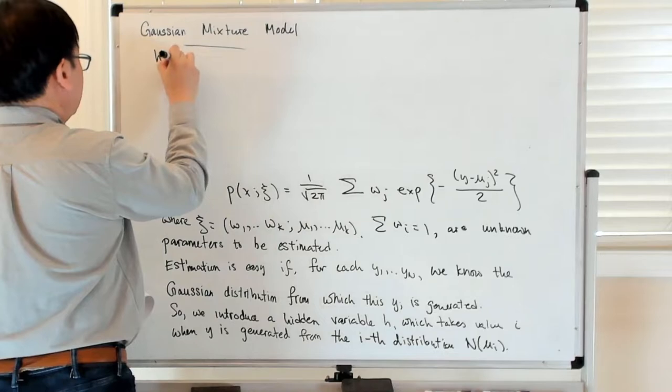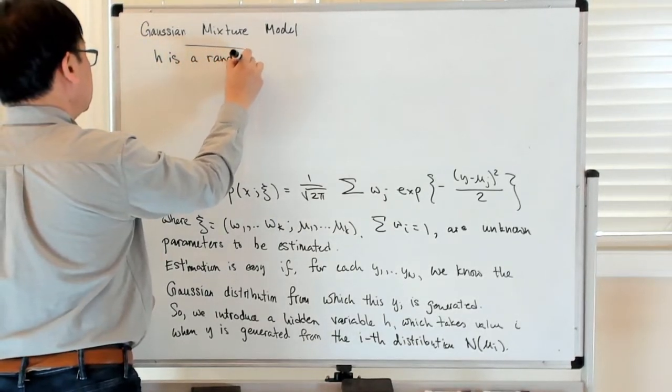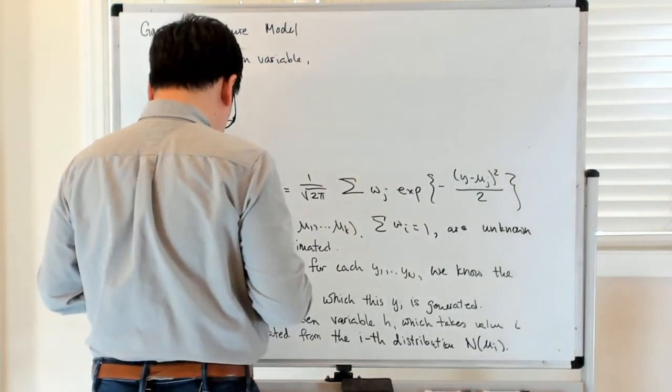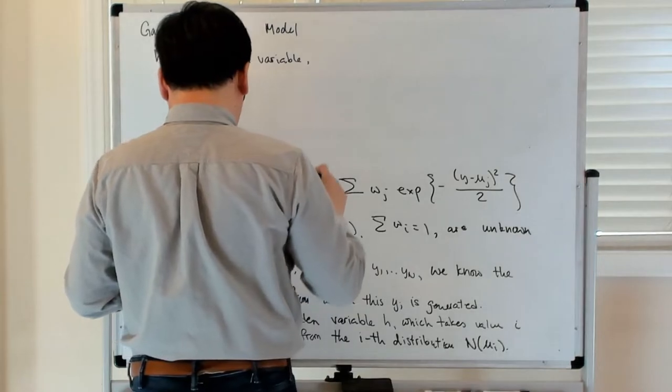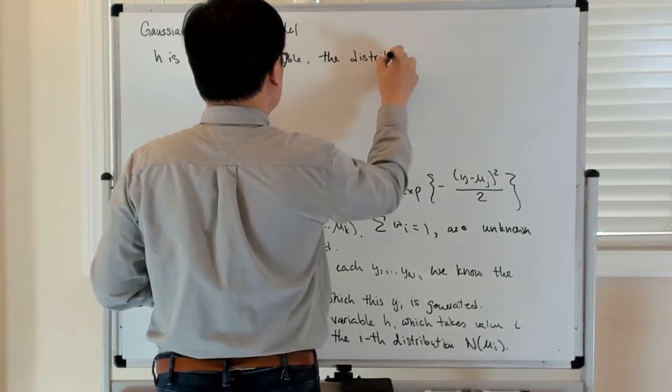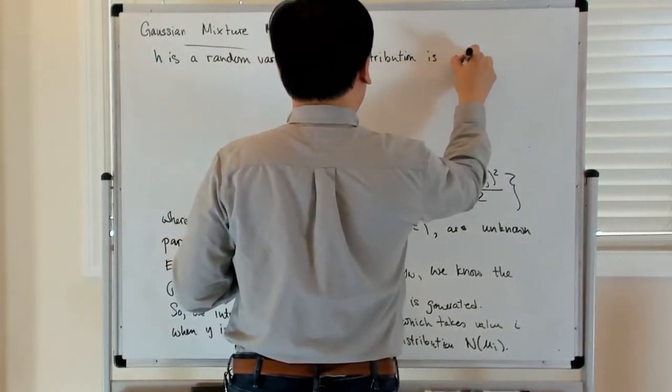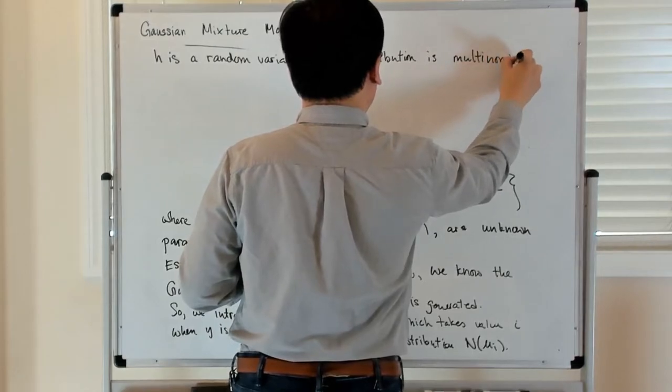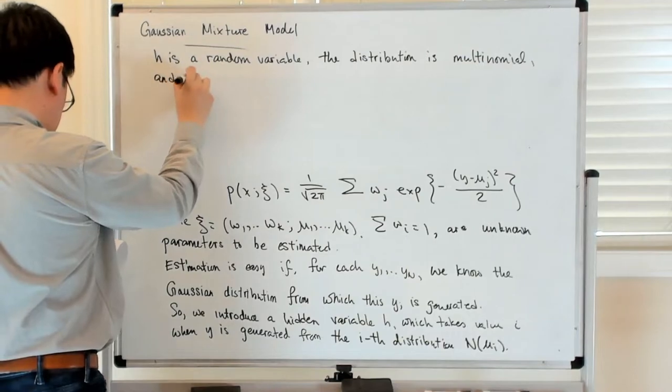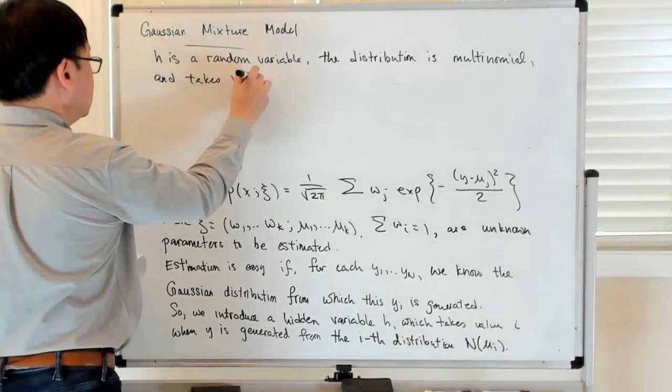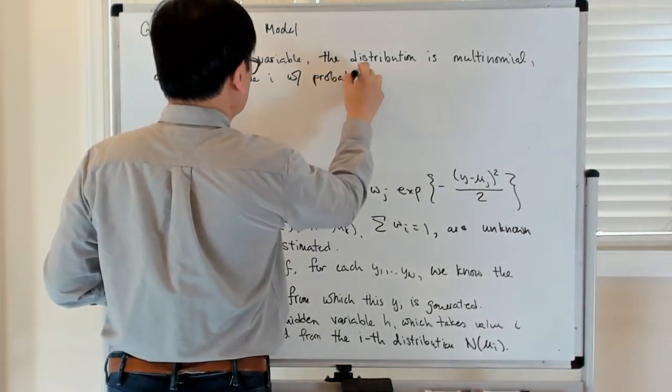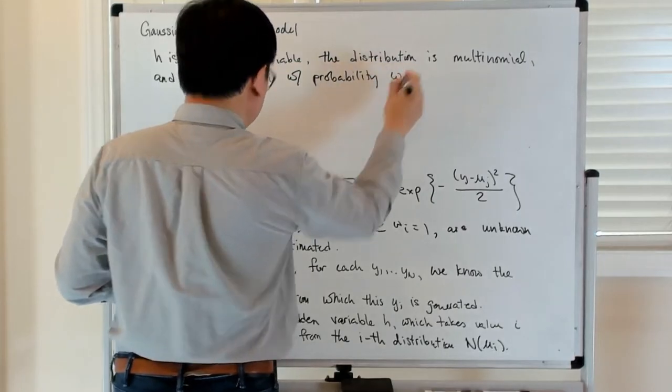So h is a random variable, and the distribution, which is multinomial, takes value i with probability w_i. So that's nice.